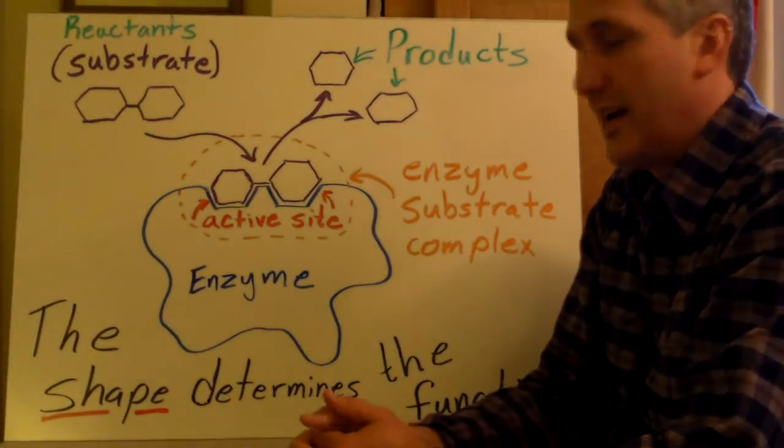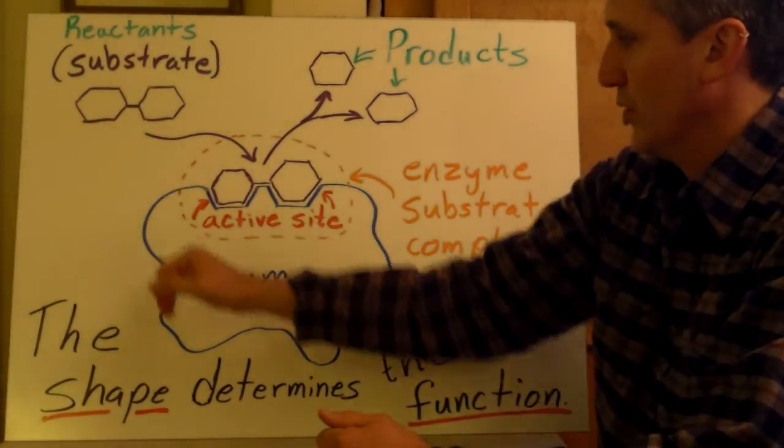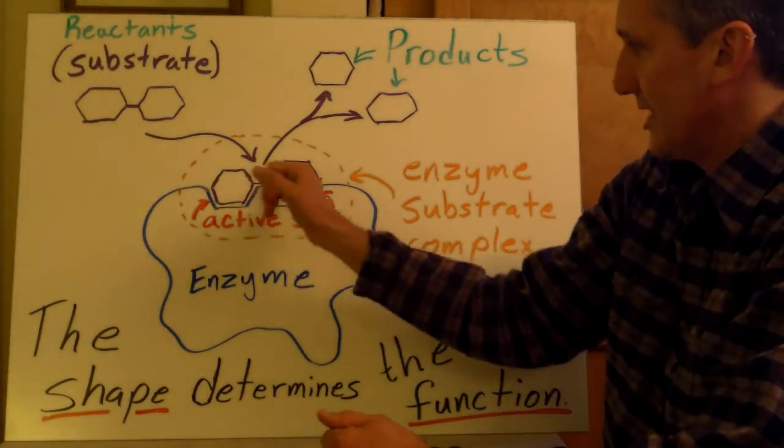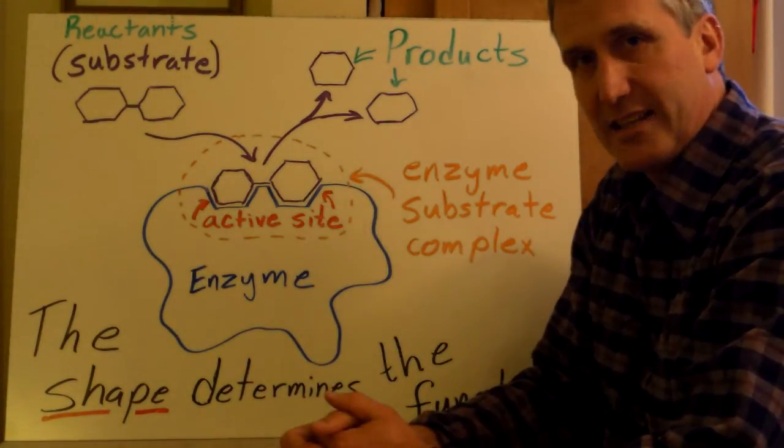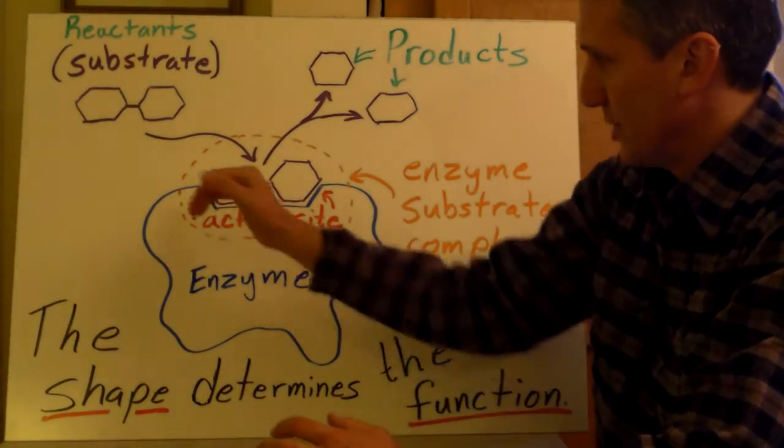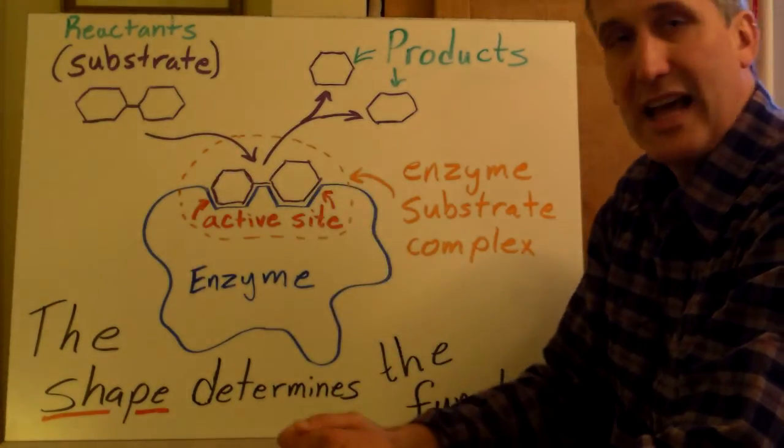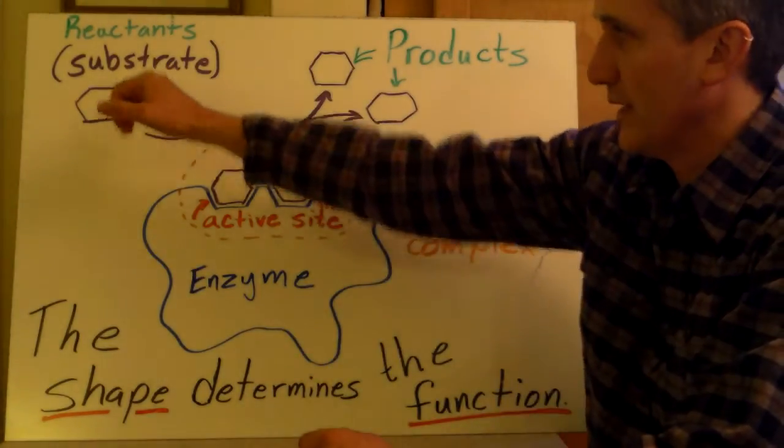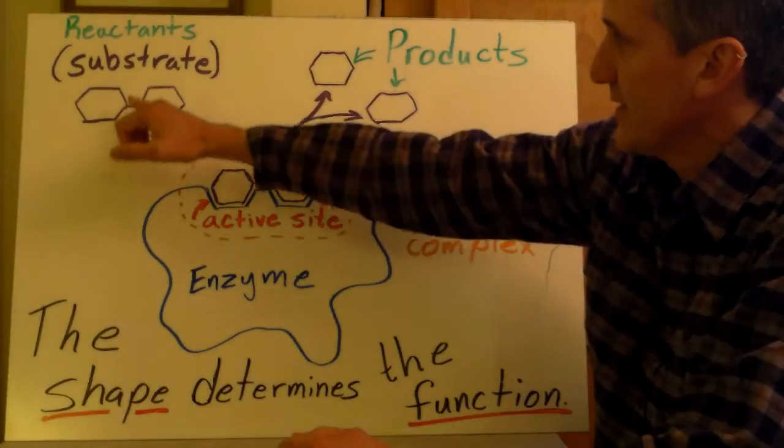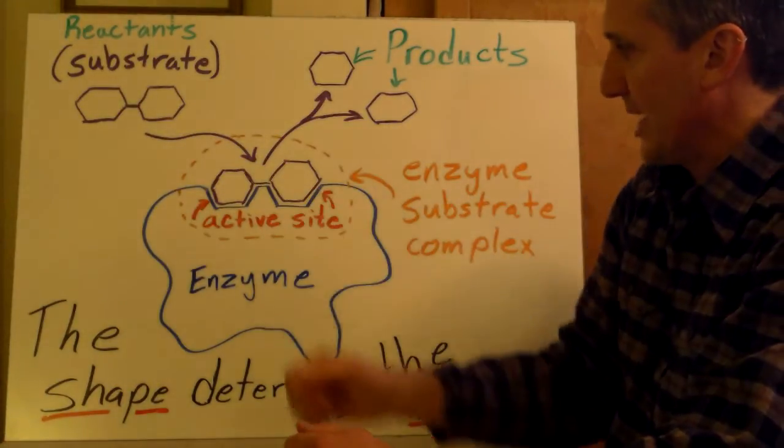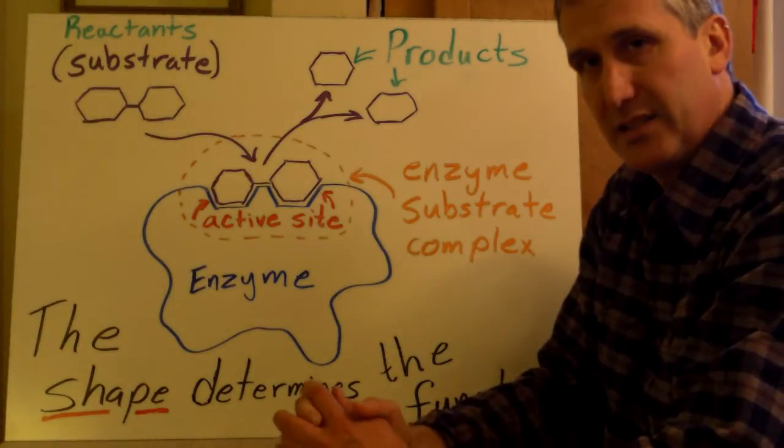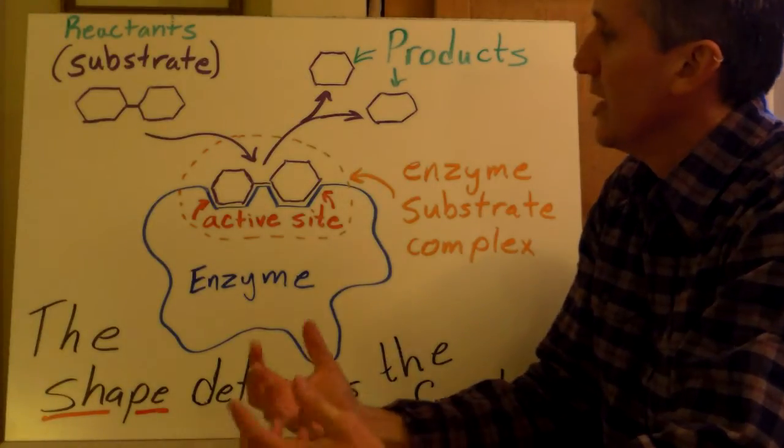So let's understand the diagram here. We have the blue enzyme and part of that enzyme is called the active site. So there's a place on the enzyme that has a specific shape that allows it to bind with a specific substrate. When that substrate comes in and binds with the enzyme, an enzyme-substrate complex is formed.